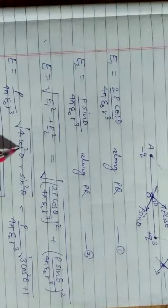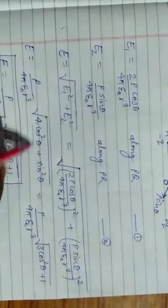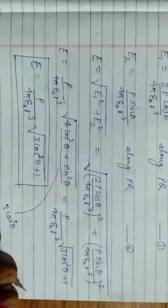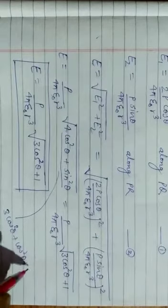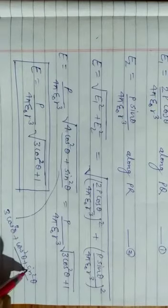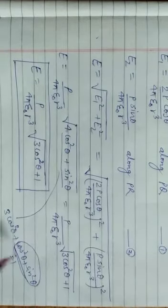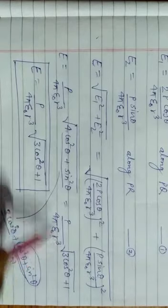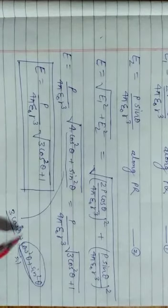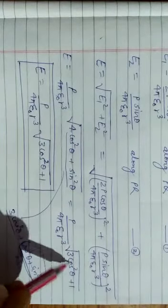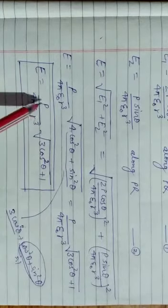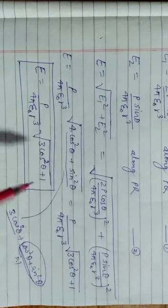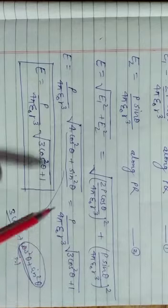इसको हम ऐसे लिख सकते हैं: 3cos²θ + cos²θ + sin²θ। हम जानते हैं cos²θ + sin²θ = 1, so it becomes 3cos²θ + 1. Therefore, our electric field intensity E = P / (4πε₀ R³) × √(3cos²θ + 1). This is the electric field at any general point due to an electric dipole.